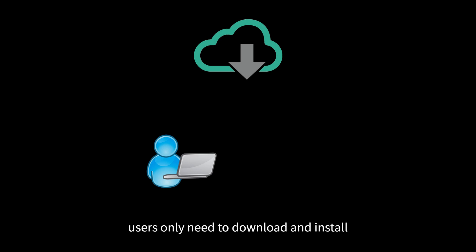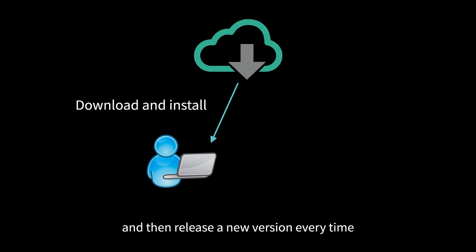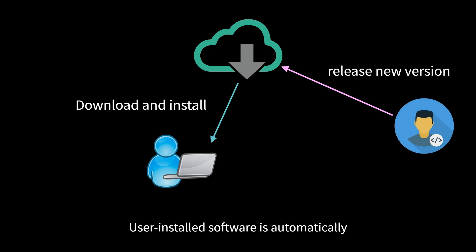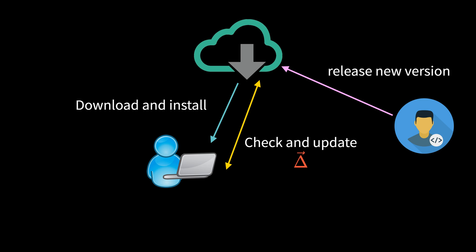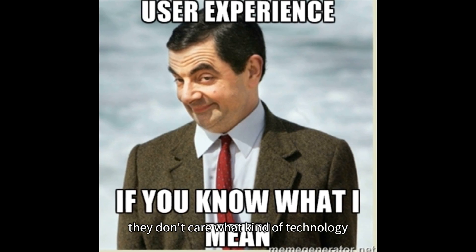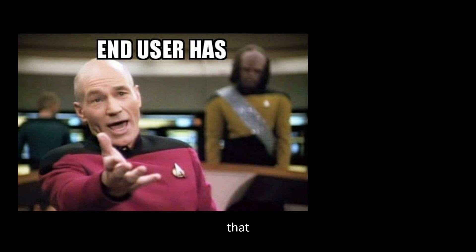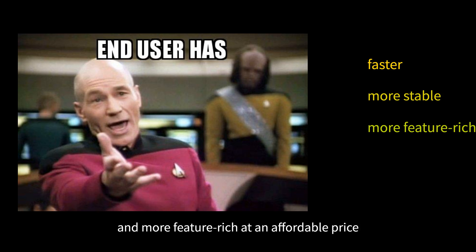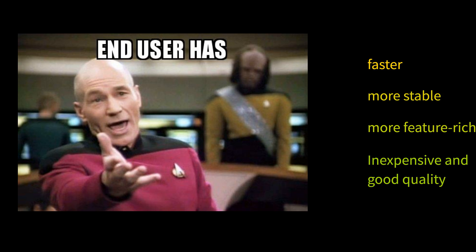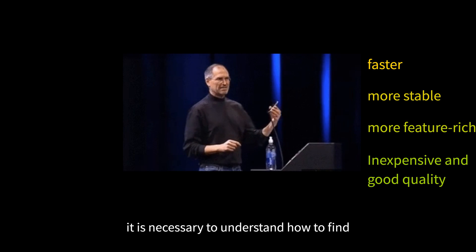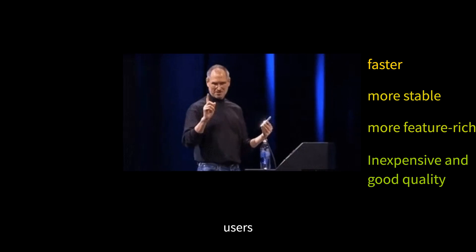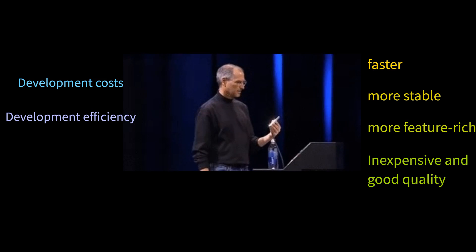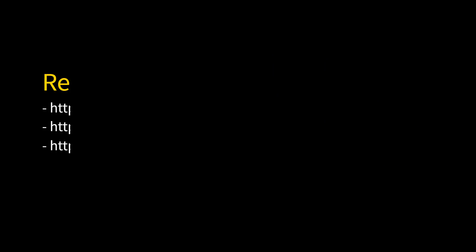That is to say, users only need to download and install it once. Then every time a new version is released, the user's installed software is automatically updated, and only the changed parts are downloaded. This is convenient and necessary in the internet age. In fact, users don't care what kind of technology is used — what they want is a product or service that is faster, more stable, and more feature-rich at an affordable price. So whether it's Electron.js or something else, it's okay. However, as a technology decision-maker, it is necessary to understand how to find the optimal balance among development costs, development efficiency, and the quality of the product to satisfy users. That's it for this video.